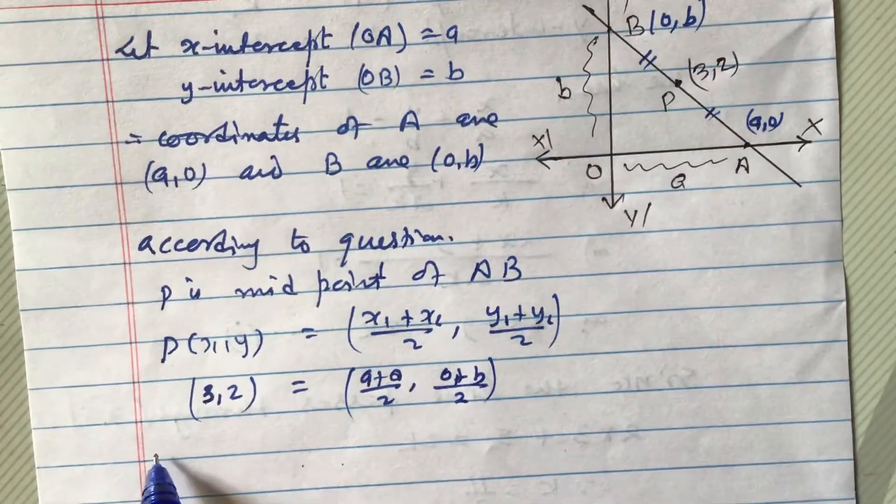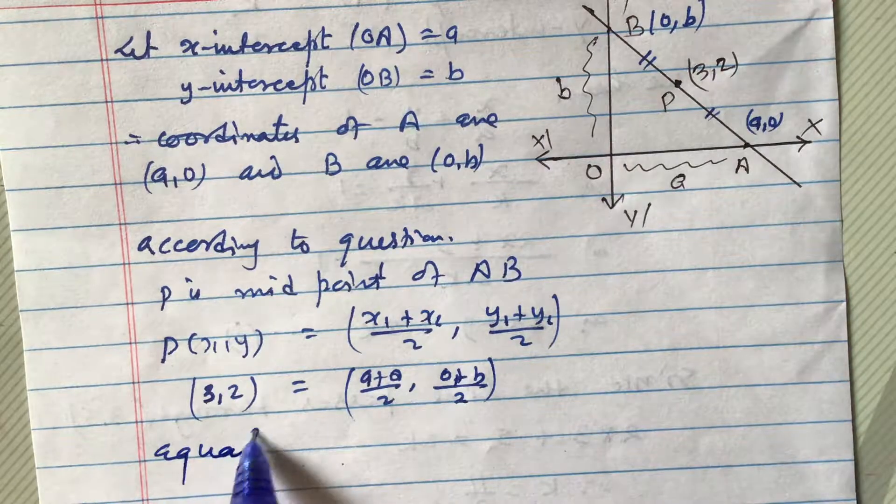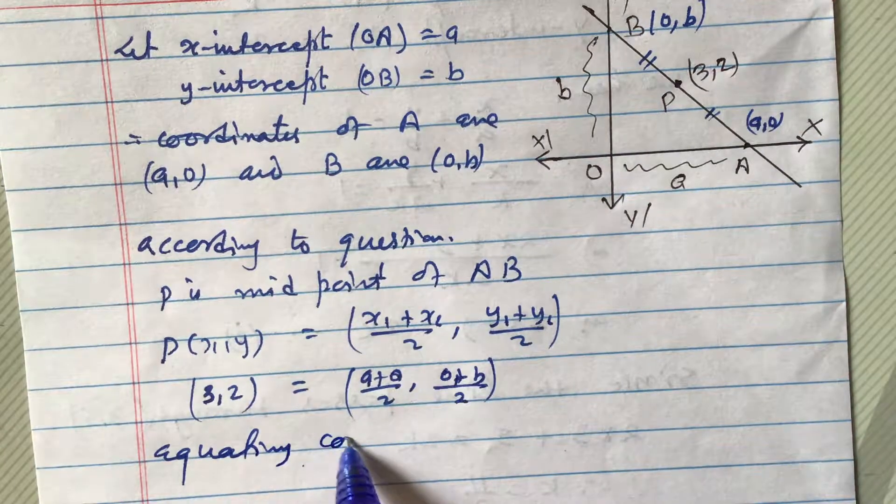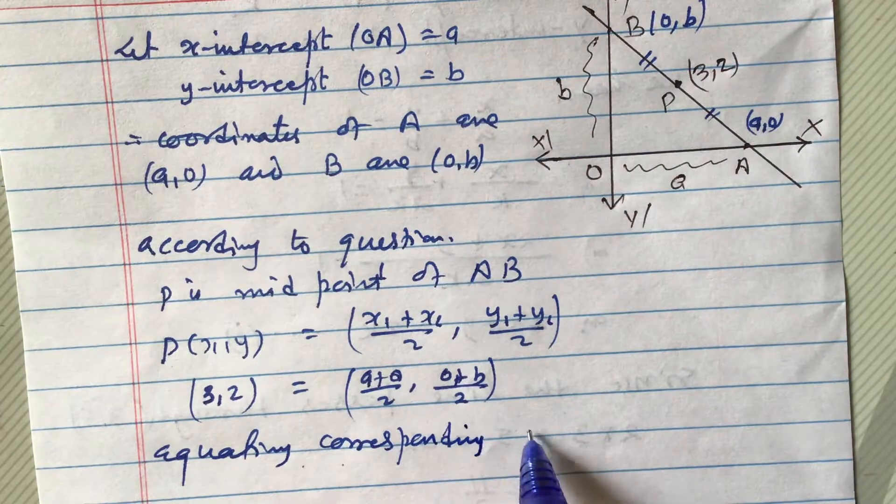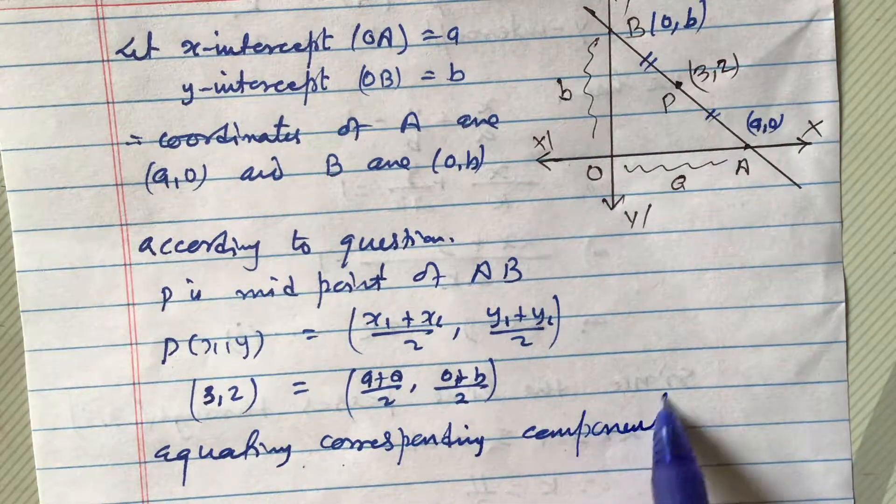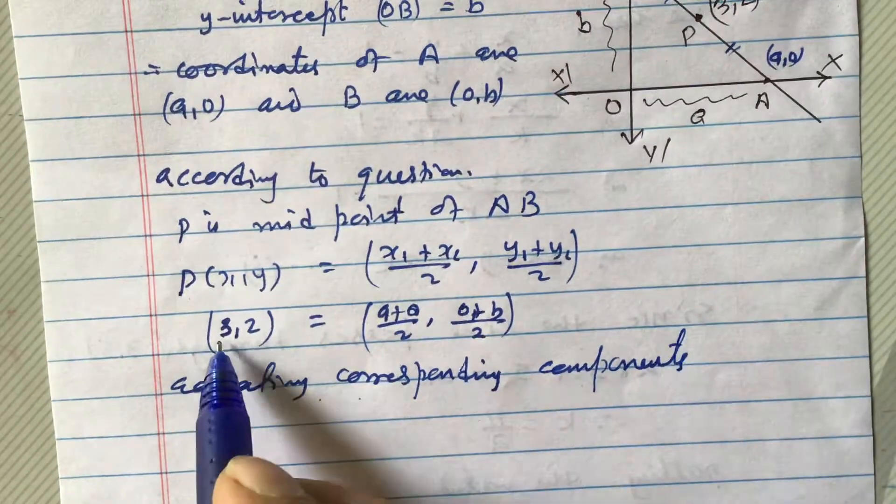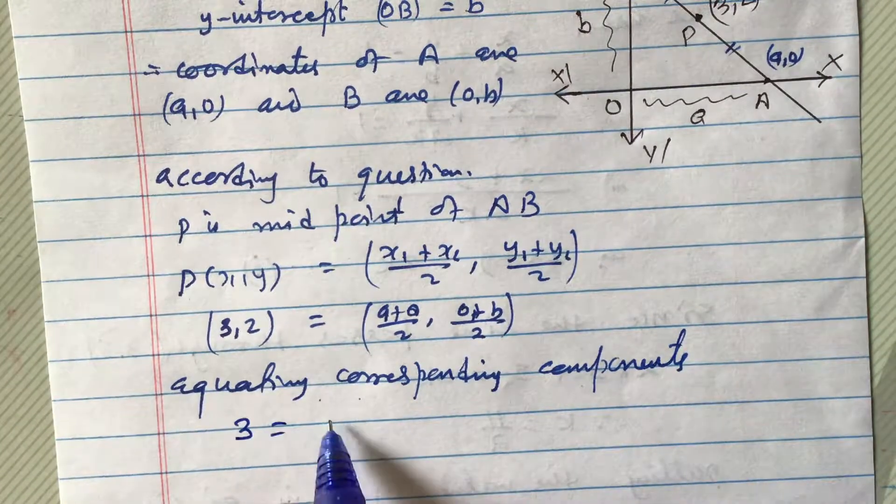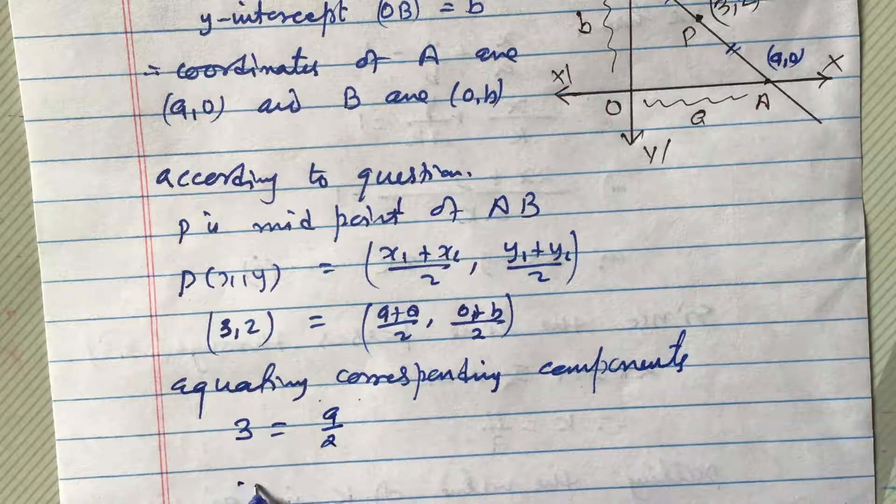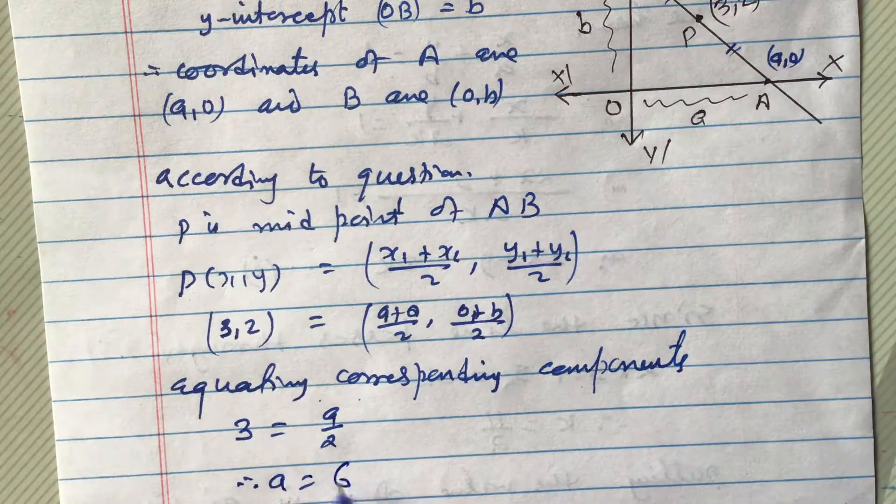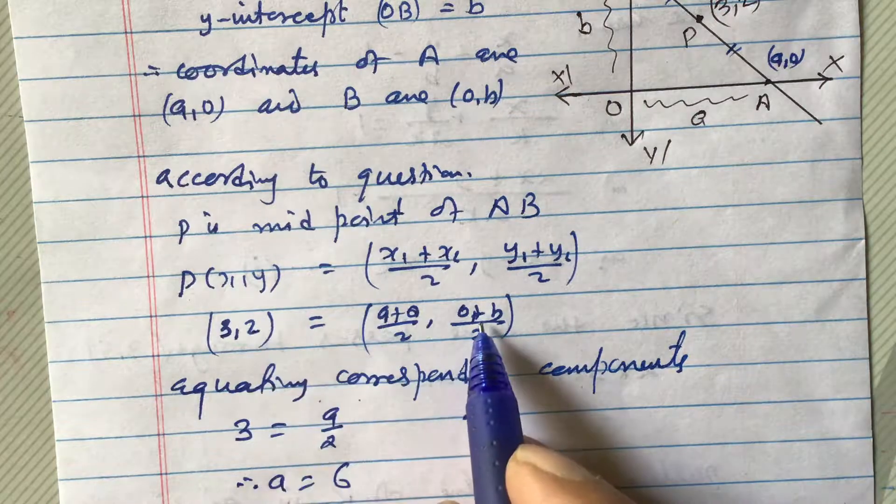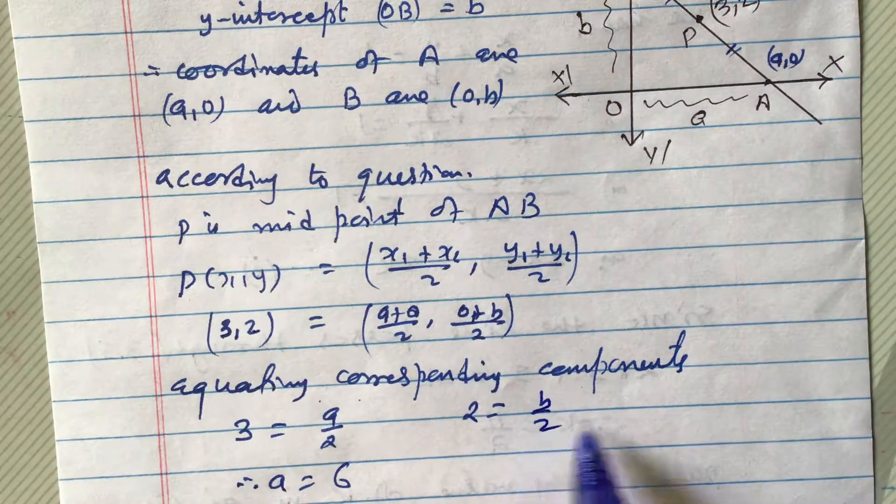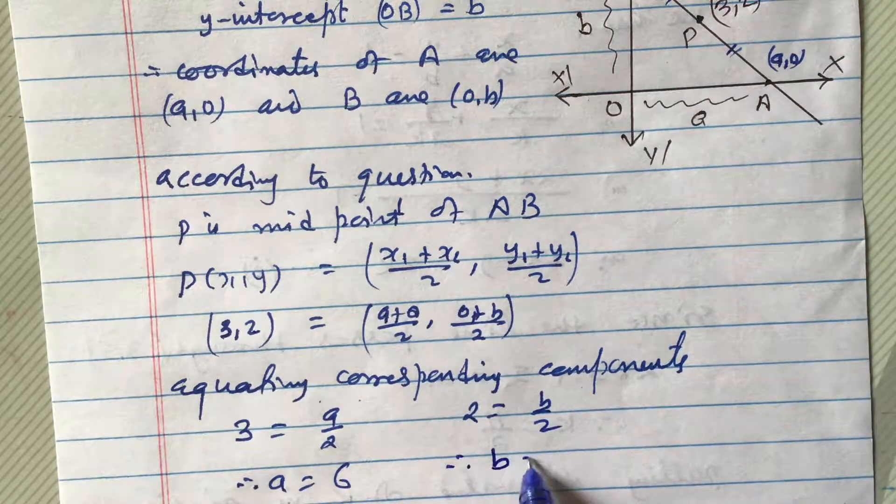We can equate now equating corresponding components. If we equate corresponding components, then 3 will be equals to A by 2. Therefore, A equal to 6, and again this is 2 equals to y component here 2, here y is B by 2. So, B by 2, therefore, B equals to 4.